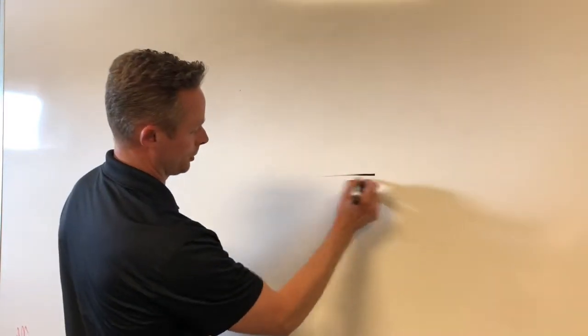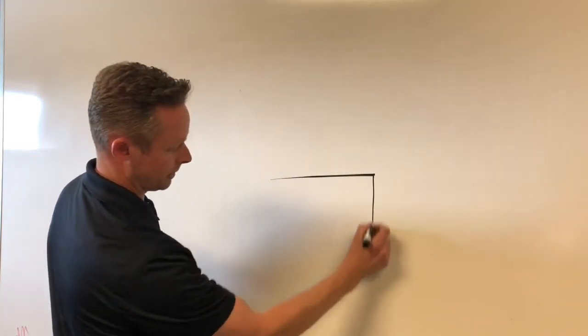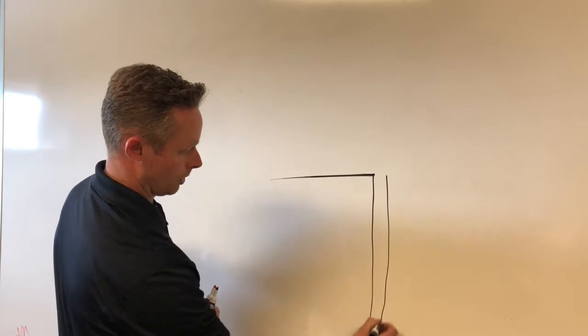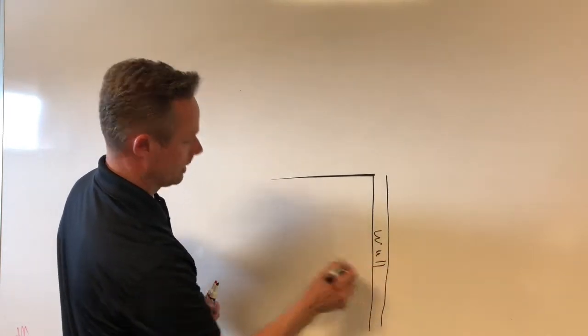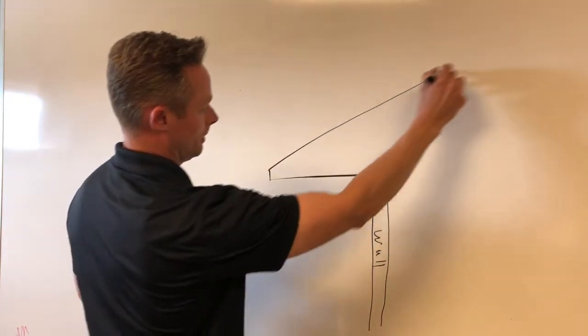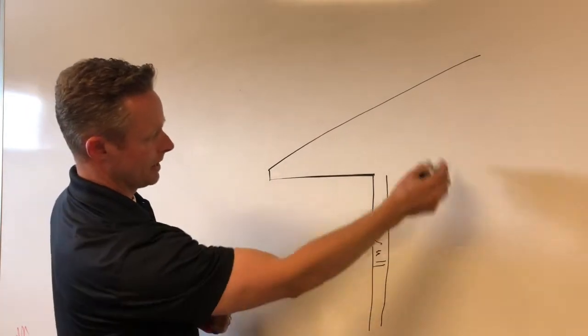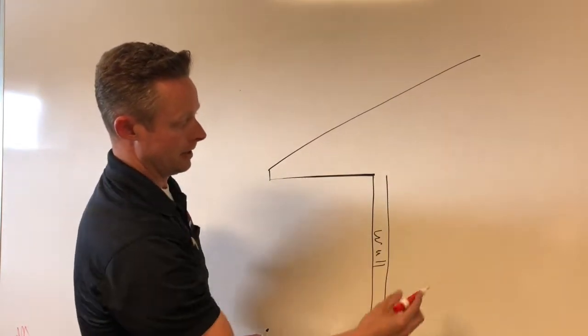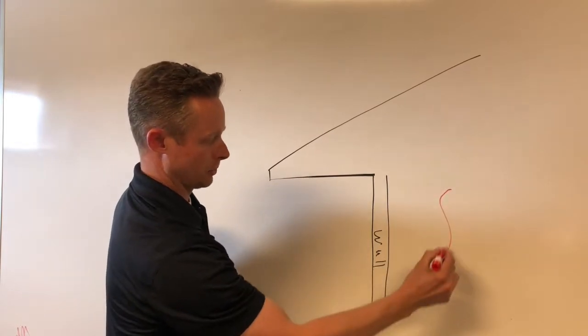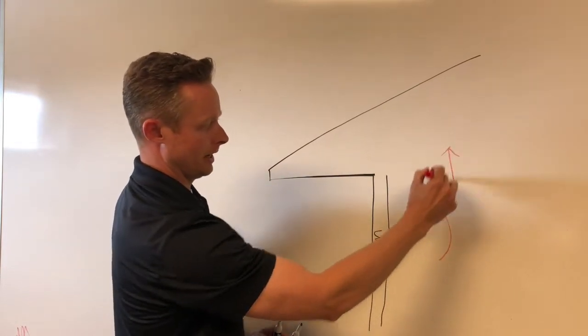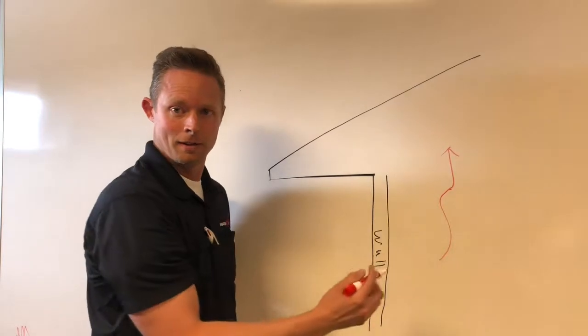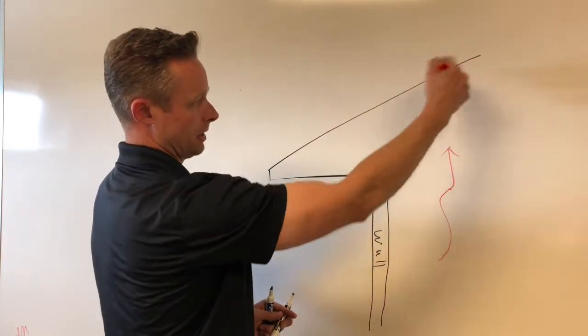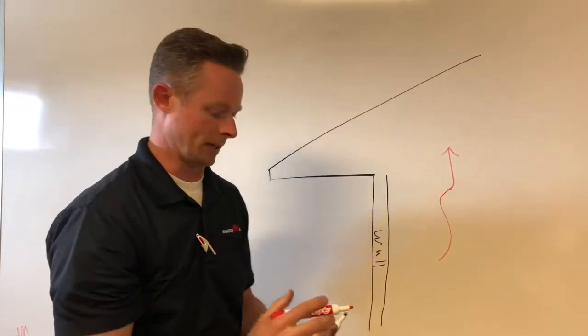So let's first off, we're going to create our roof eave right here. Here's our wall and our roof runs up like that. Inside the house here we have our attic space up here, but you heat the house right, and as you heat the house the heat rises. As this heat rises in the house it comes up and accumulates in the attic space.